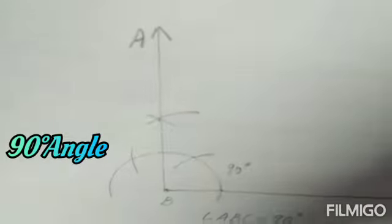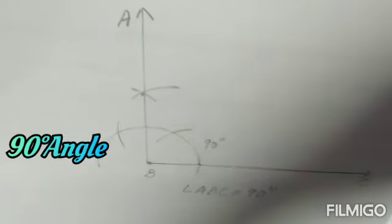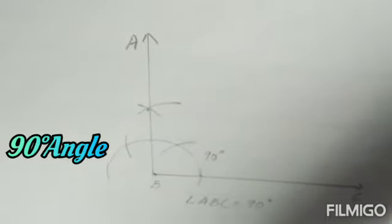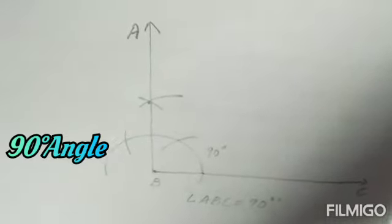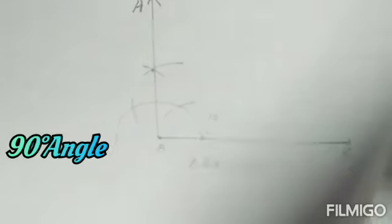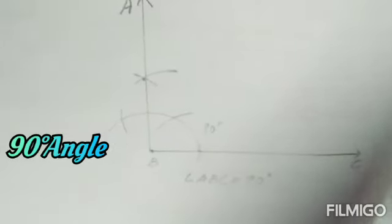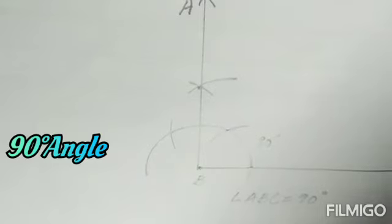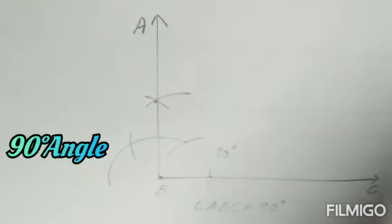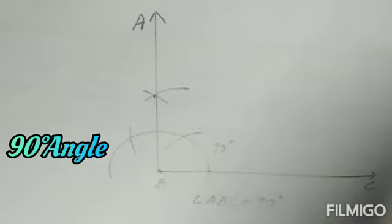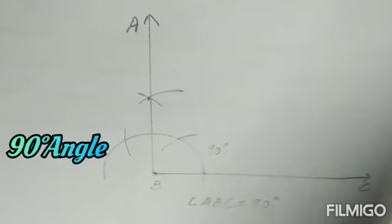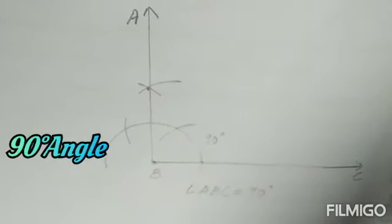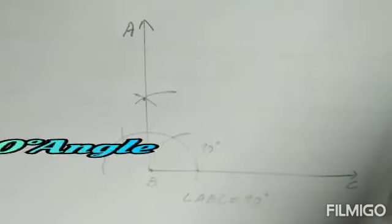With this we complete four angles today: the construction of 60 degree, 90 degree, 120 degree, and 180 degree angles. I hope I have made myself very clear and you have understood all four constructions step by step. See you in my next video — till then, take care, bye bye, and don't forget to subscribe, like, share, and comment.